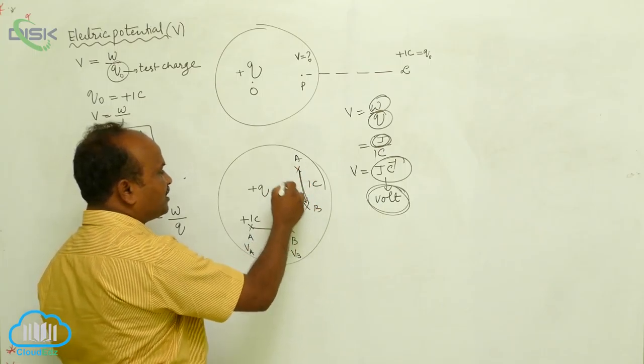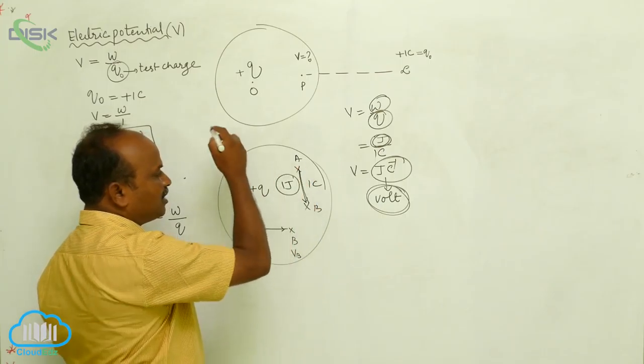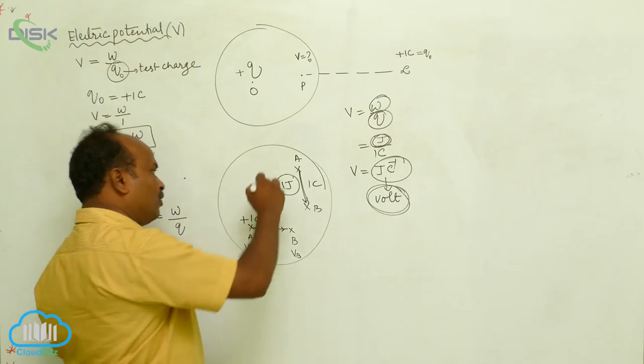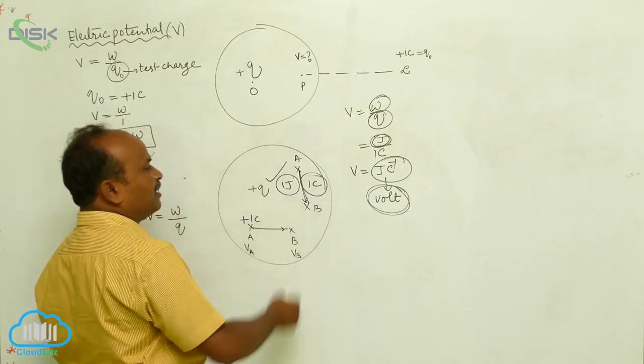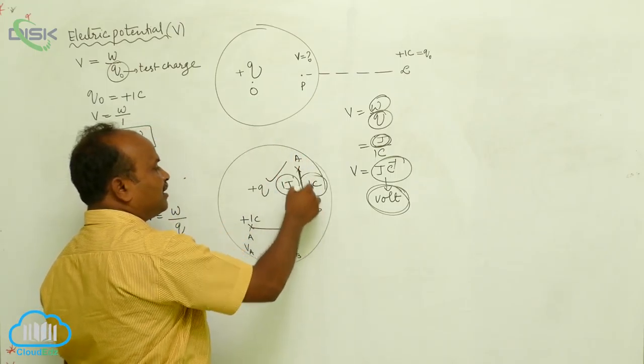In moving one coulomb of charge, what is the work done? One joule. If only one joule of work is done in moving a charge of one coulomb, there is a potential difference. That potential difference is said to be one volt.